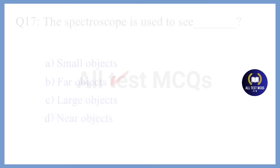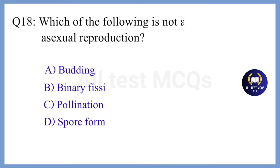Question 18. Which of the following is not a method of asexual reproduction? The correct answer is Option C. Pollination.